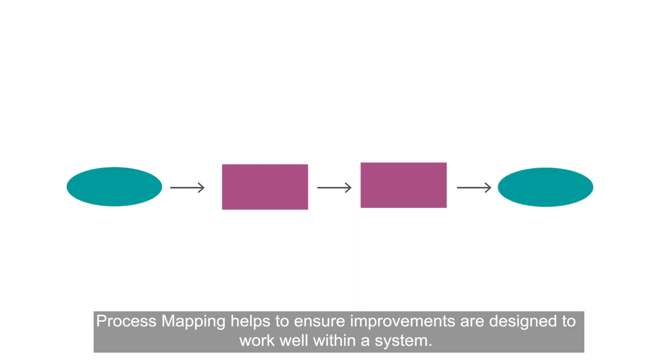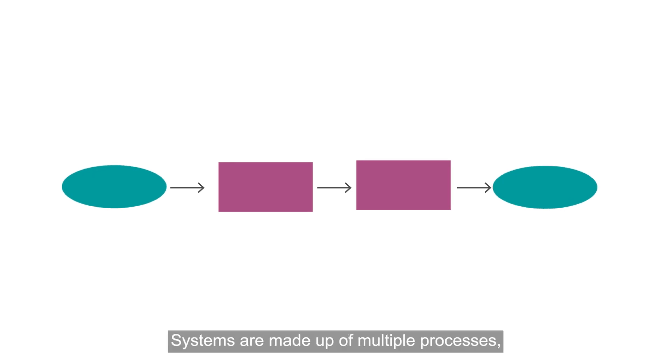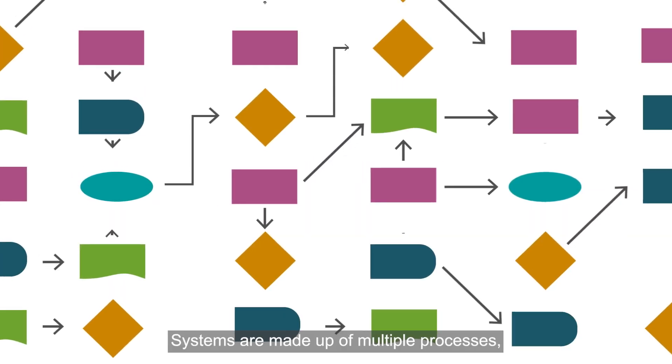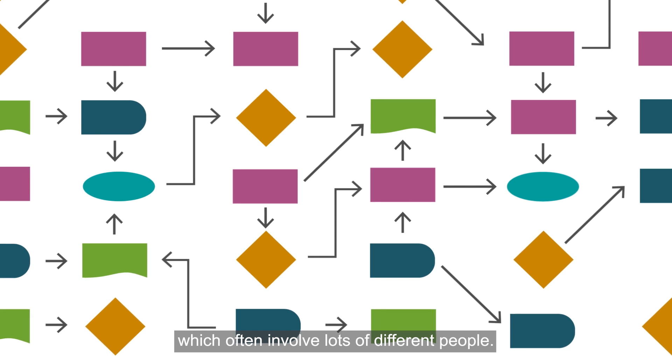Process mapping helps to ensure improvements are designed to work well within a system. Systems are made up of multiple processes, which often involve lots of different people.